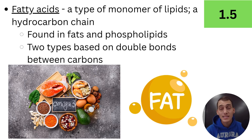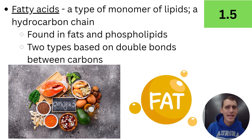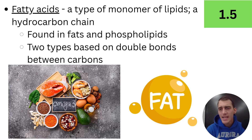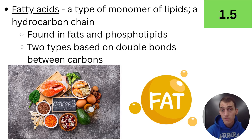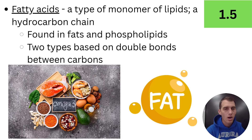A fatty acid is a type of monomer of lipids, and it's basically just a hydrocarbon chain — just carbons with hydrogens bonded to them. They have what's called a carboxyl group at one end. Fatty acids are found in two types of lipids: they're found in fats and they're found in phospholipids. There are two main types of fatty acids based on how many double bonds they have between the carbons in that carbon chain.